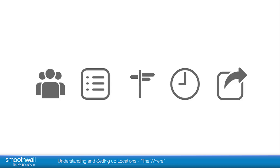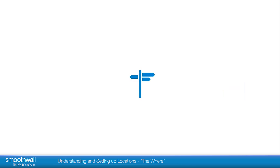Understanding and setting up locations — the where. Filtering policies in the software were defined by a set of simple logical parameters: who, what, where, when, and the action to be taken. The origin of the traffic that you want the rule to apply for is known as the where, or as the location.